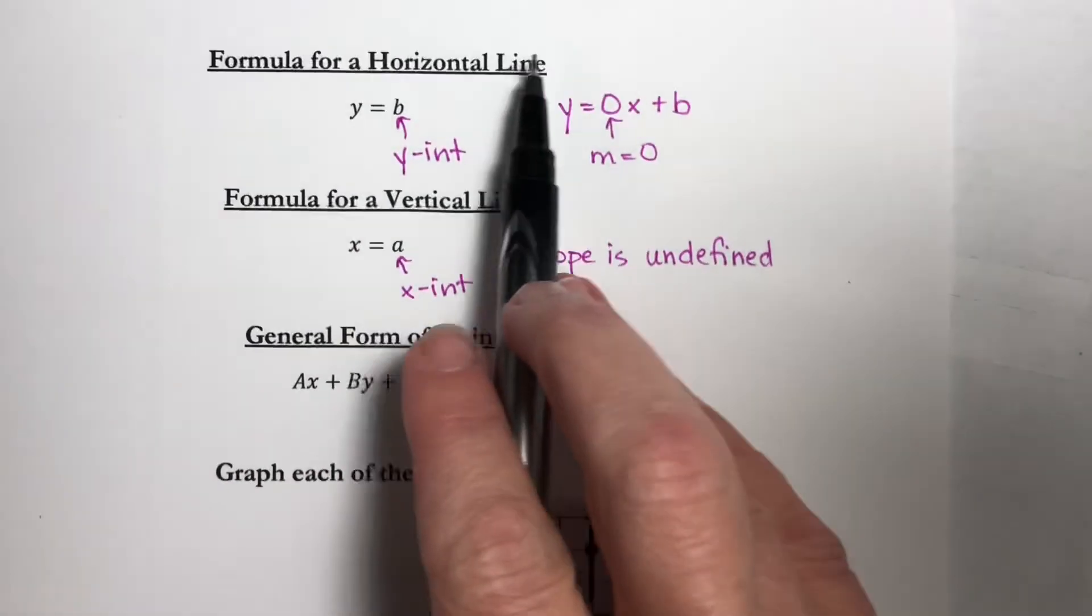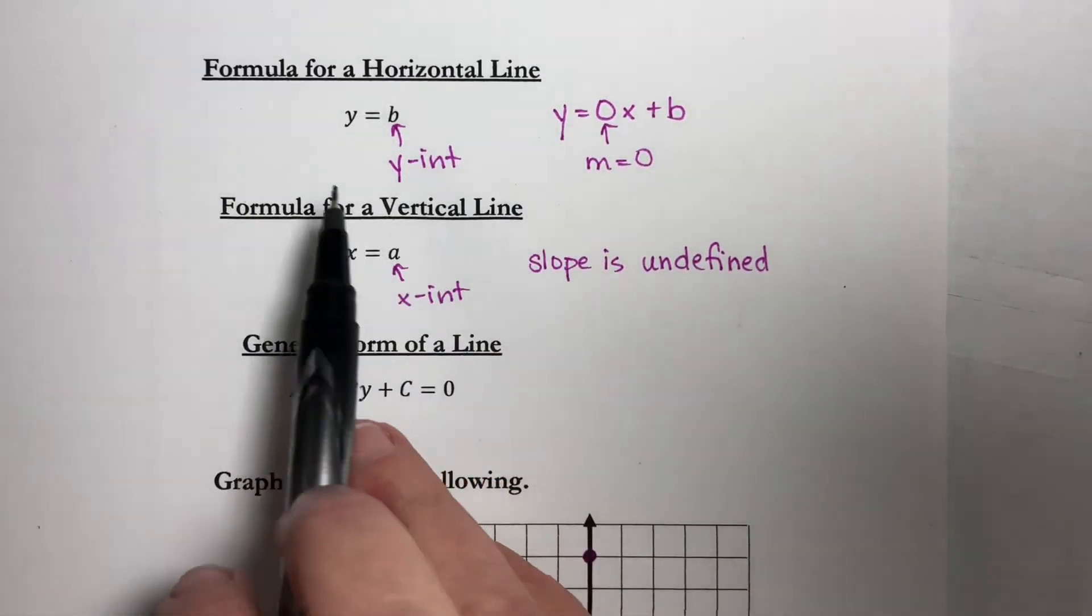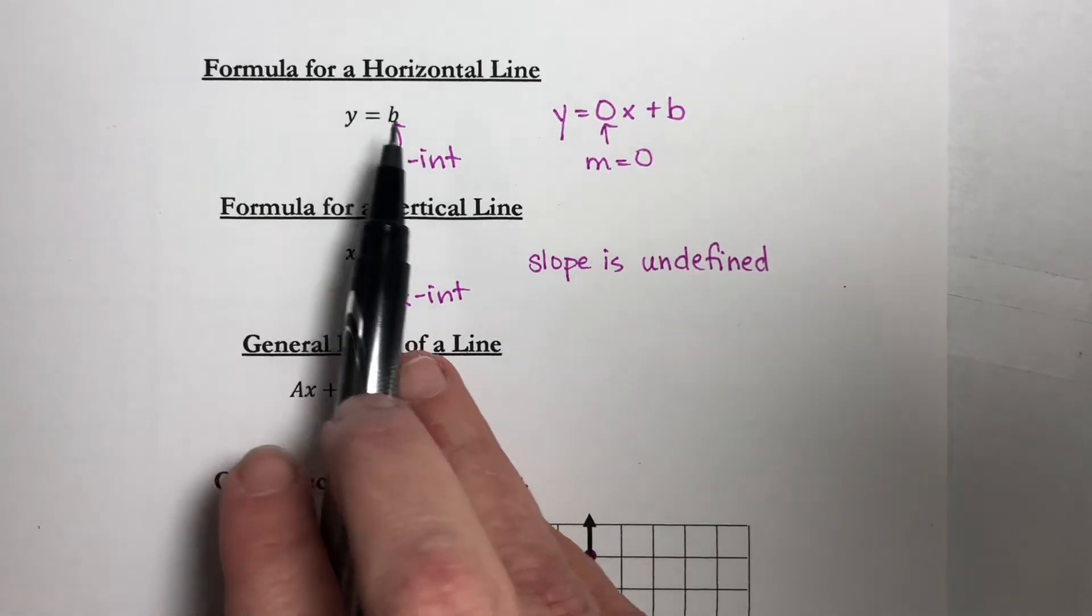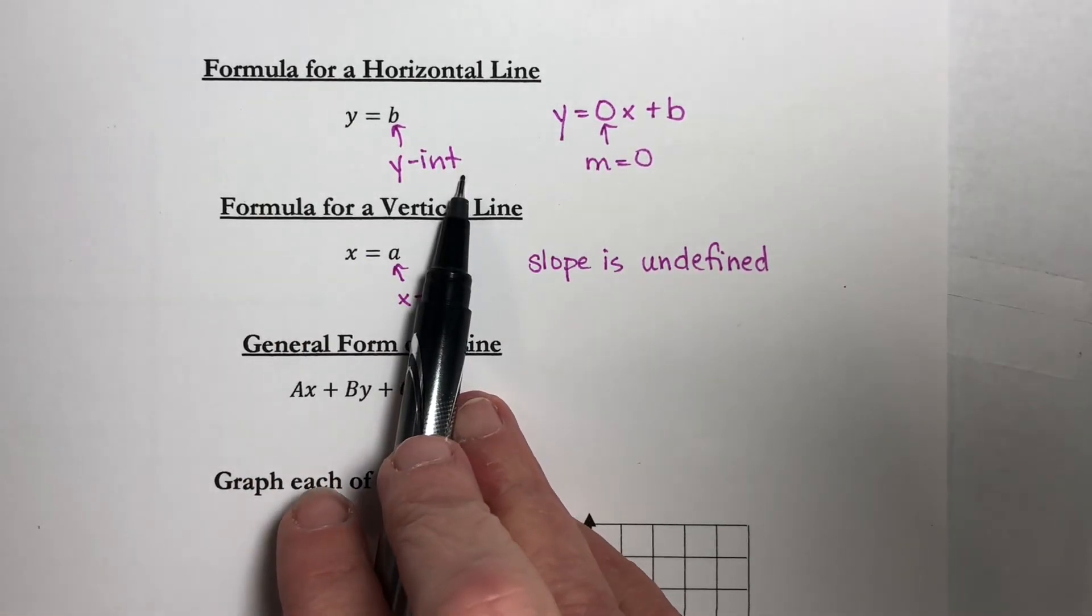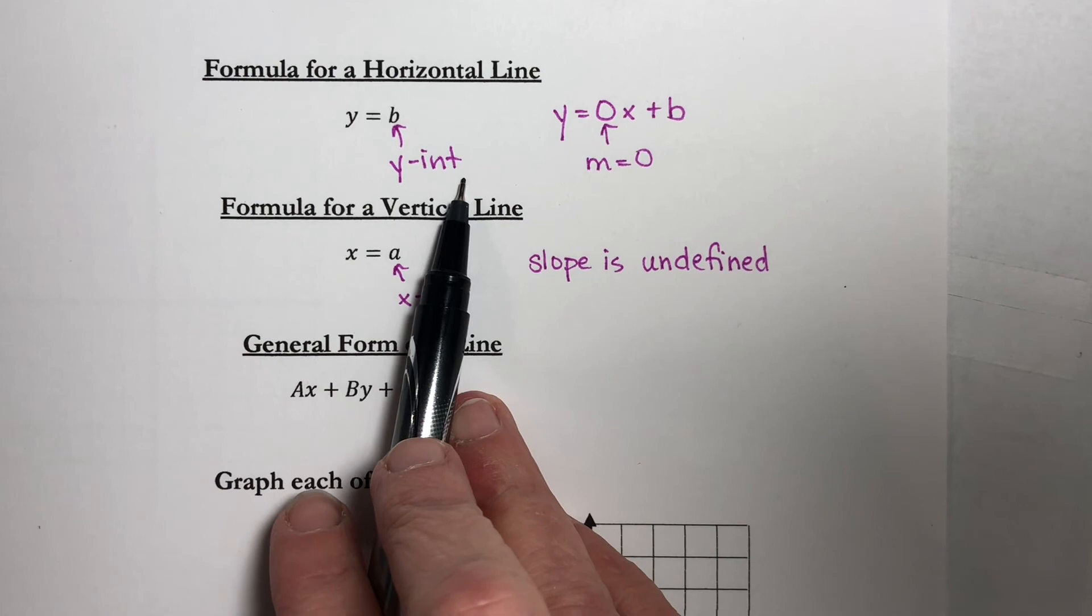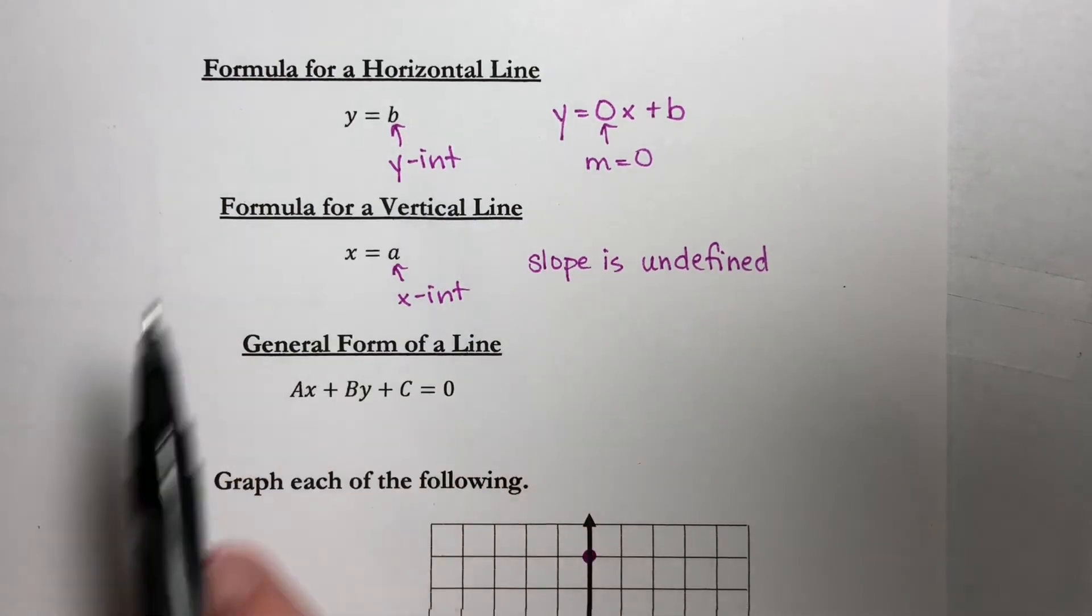Now if you have trouble remembering which of these is which, just remember that this variable tells you what kind of intercept you have, and then ask yourself what kind of line must have a y-intercept.